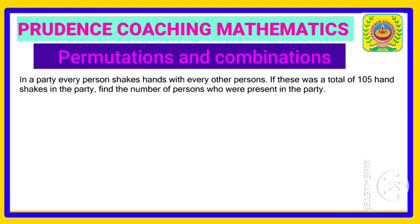So here, what is going on is each person is handshaking with the other person who is present in the party. By doing this, the total number of handshakes after completion of each and every handshake with the other person is 105.